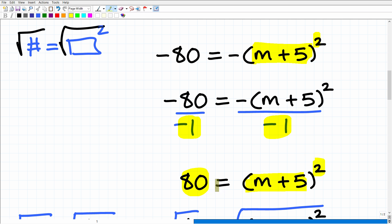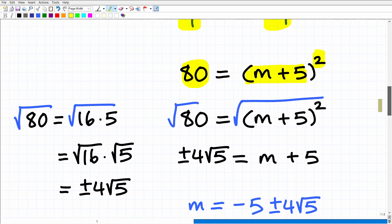At this stage here, we are set to take the square root of both sides. We're going to have √80 = √[(m + 5)²]. The square root of something squared is just that something. If you have x², the square root of x² is x. So here, (m + 5)², the square root of that is simply going to be m + 5. And that is going to be equal to the square root of 80, which I have written here as ±4√5.